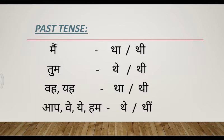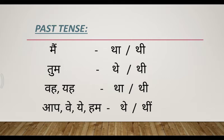Next, with plural and respect forms. For 'aap' — respect — we use 'the' or 'teen.' Feminine sentence uses thi, but with plural and respect, 'teen' is added. Masculine: aap ghar mein the — you were in the house. For 'hum': hum ghar mein the. If a group of girls: hum ghar mein teen. Ve ladke maidan mein the, hum school mein teen. Feminine plural respect means teen is used.